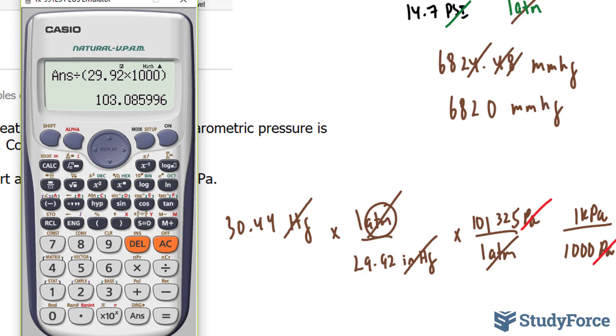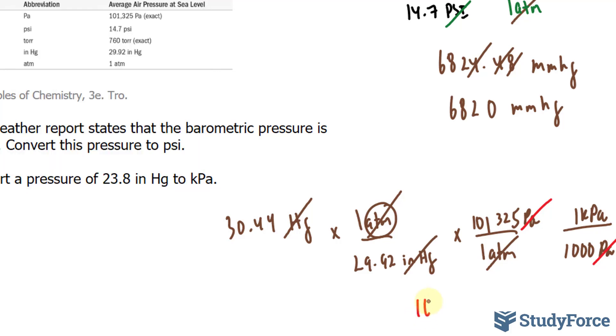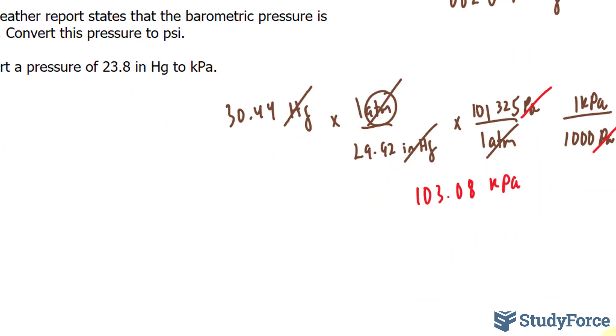We end up with 103.08 kilopascals. Let's respect the number of significant digits. We started with 4, and we should end with 4. Since this 8 is greater than 5, this number will go up, so we have 103.1 kPa.